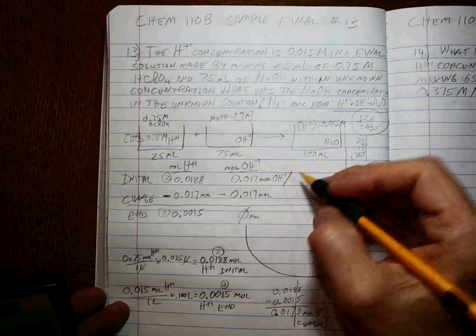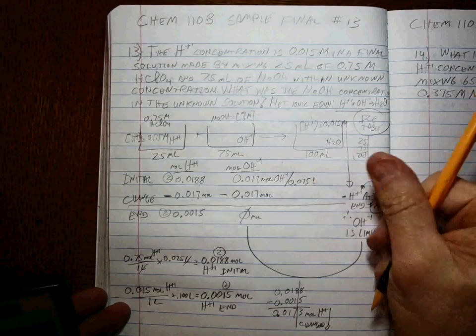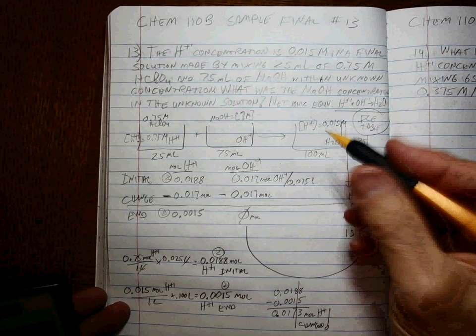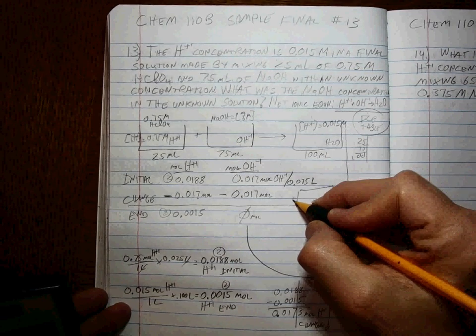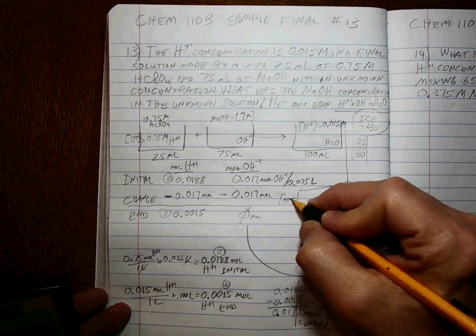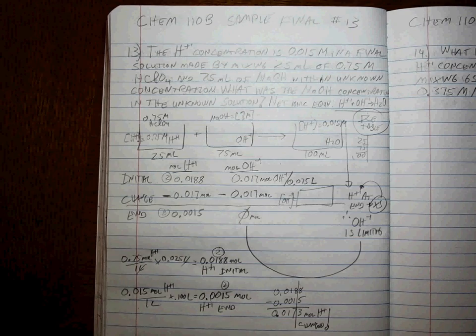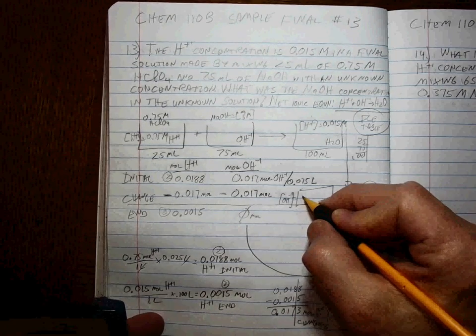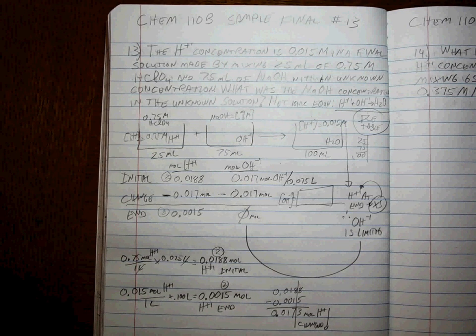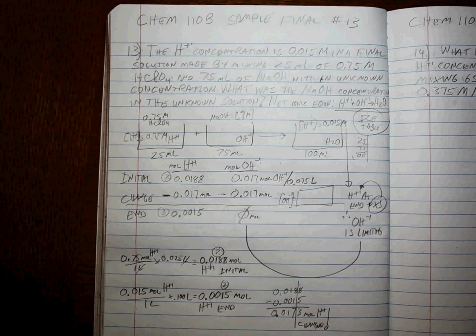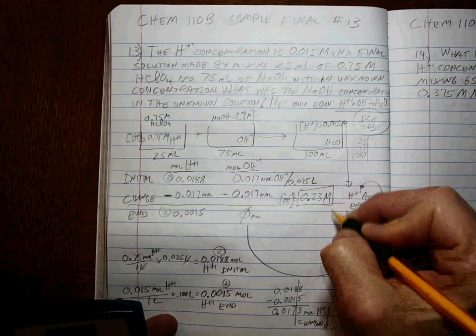If you divide by the volume in liters, moles hydroxide per liter, that's the answer. That's what we want for the hydroxide ion concentration, which is the same as the sodium hydroxide ion concentration. I get 0.017 divided by 0.075, which is 0.23 molar.